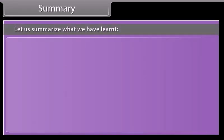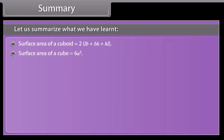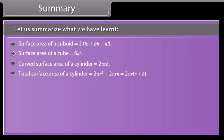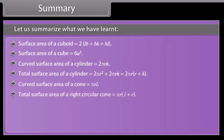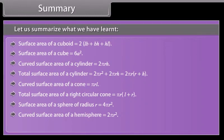Let us summarize what we have learned. Surface area of a cuboid = 2(lb + bh + hl). Surface area of a cube = 6a². Curved surface area of a cylinder = 2πrh. Total surface area of a cylinder = 2πr(r + h). Curved surface area of a cone = πrl. Total surface area of a right circular cone = πr(l + r). Surface area of a sphere = 4πr². Curved surface area of a hemisphere = 2πr². Total surface area of a hemisphere = 3πr².